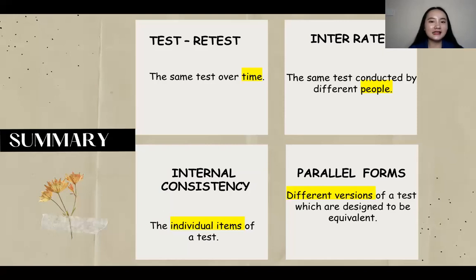So that's it for the four types of reliability for the summary. Take note of that for the test and retest, it indicates the same test over time. So from the word retest, so the same test over time. And inter-rater, the same test conducted by different people. And in internal consistency, the individual items of the test. And in parallel forms, the different versions of a test, which are designed to be equivalent.